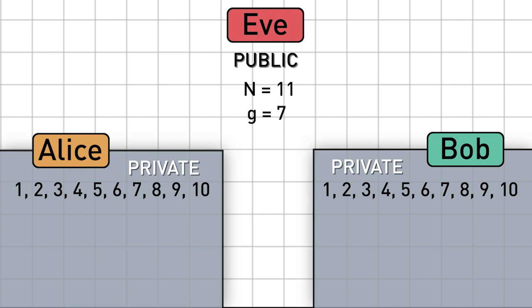Step 2. Alice and Bob each pick one number at random from the group that they won't reveal, even to each other. Let's say Alice picks a equals 2 and Bob picks b equals 4, arbitrarily.